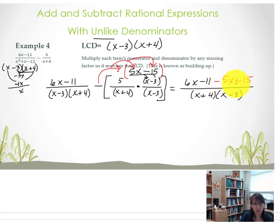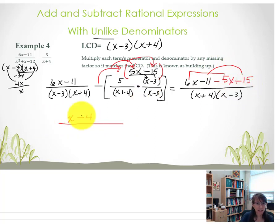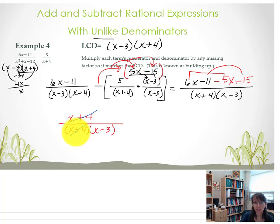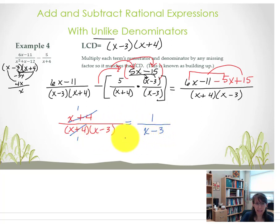Now 6x minus 5x leaves x; negative 11 plus 15 is plus 4. In our denominator we had quantity x plus 4 times quantity x minus 3. The quantity of x plus 4 reduces — remember when you have something divided by itself it equals 1. So our final answer has 1 in the numerator from that reduction and quantity x minus 3 in the denominator. Do be careful when you're reducing.